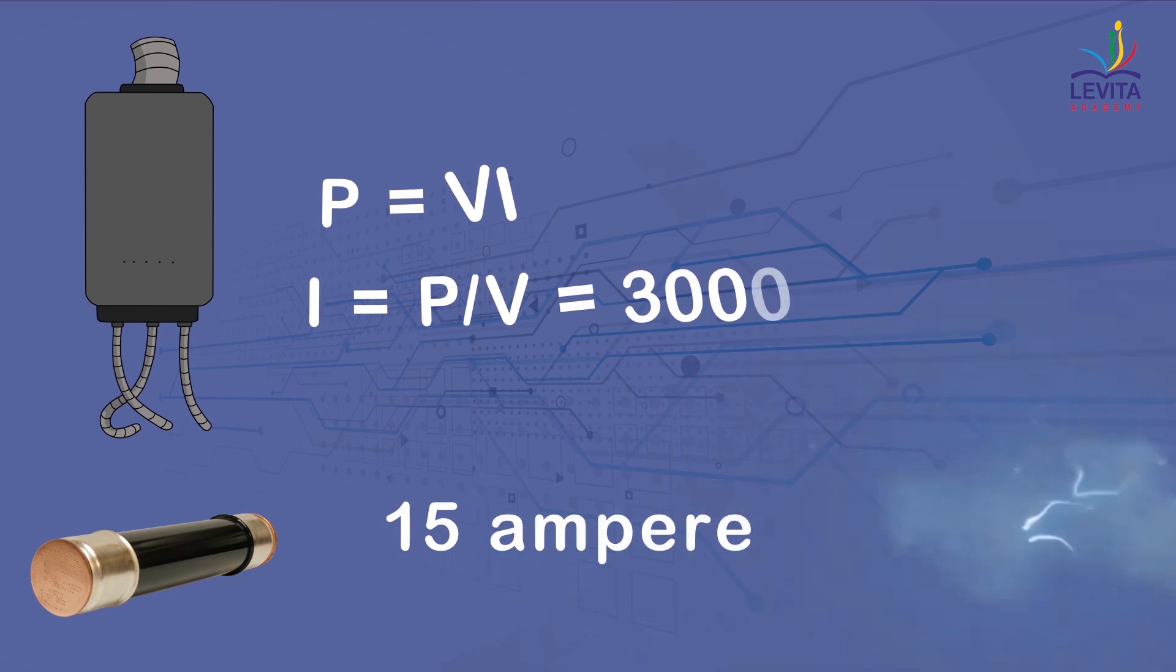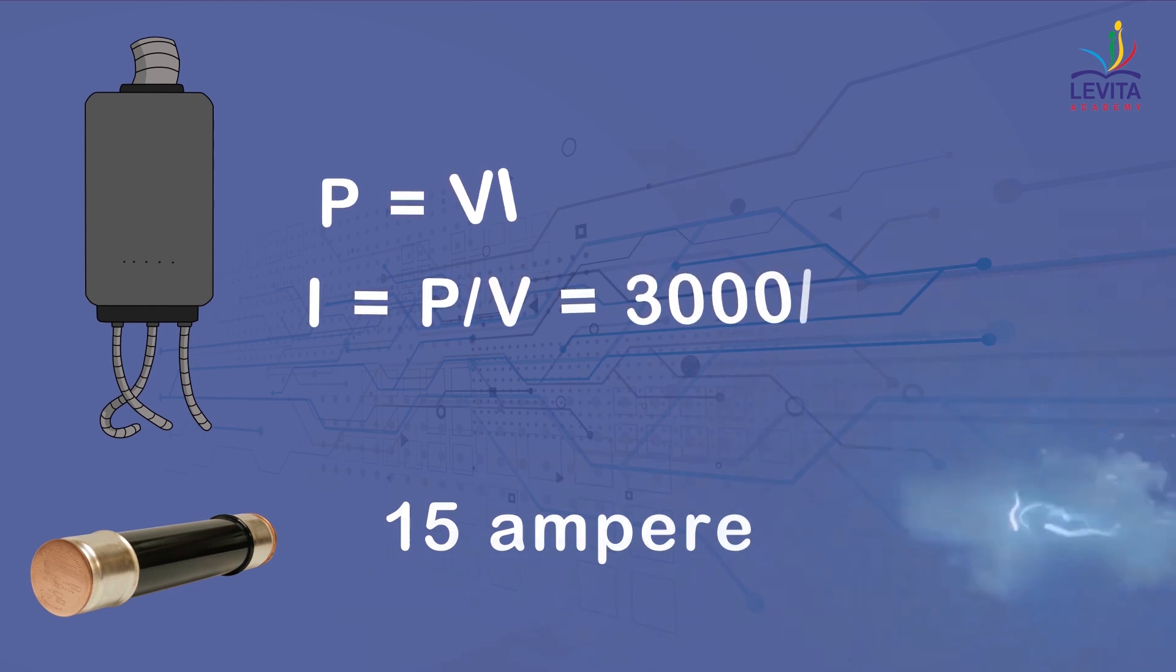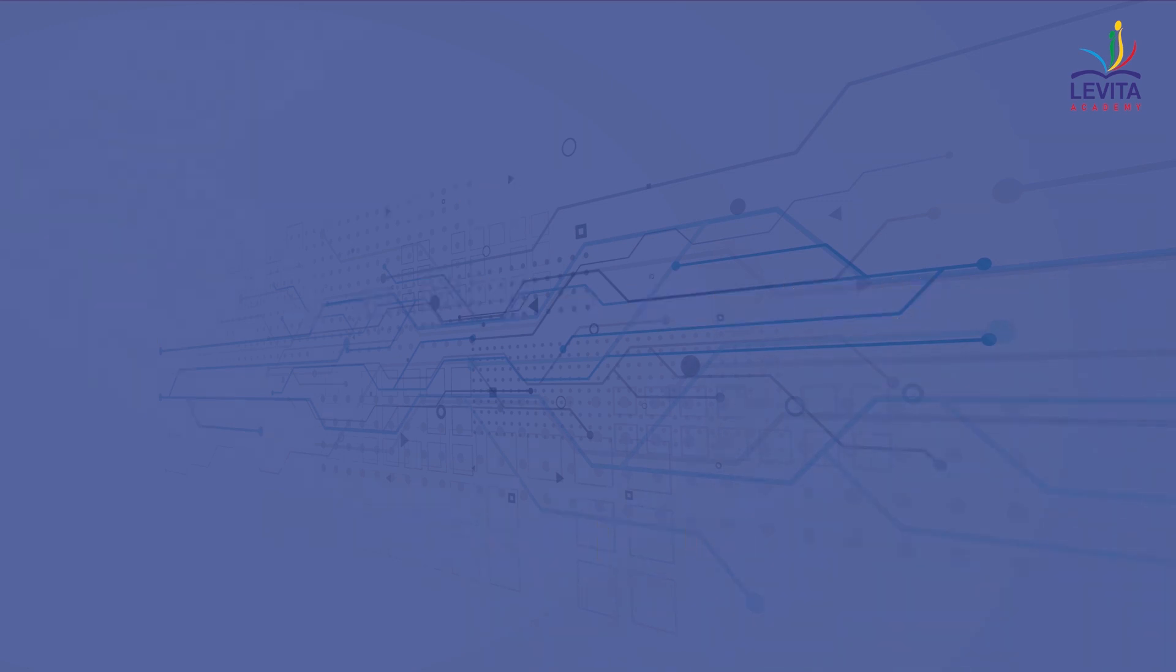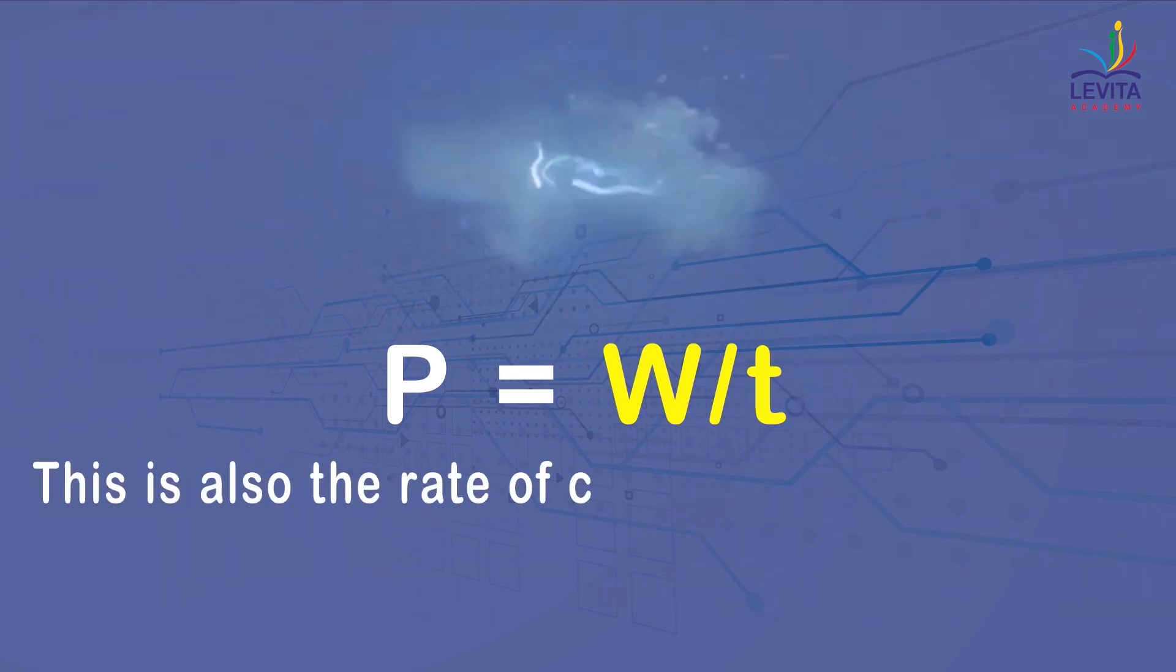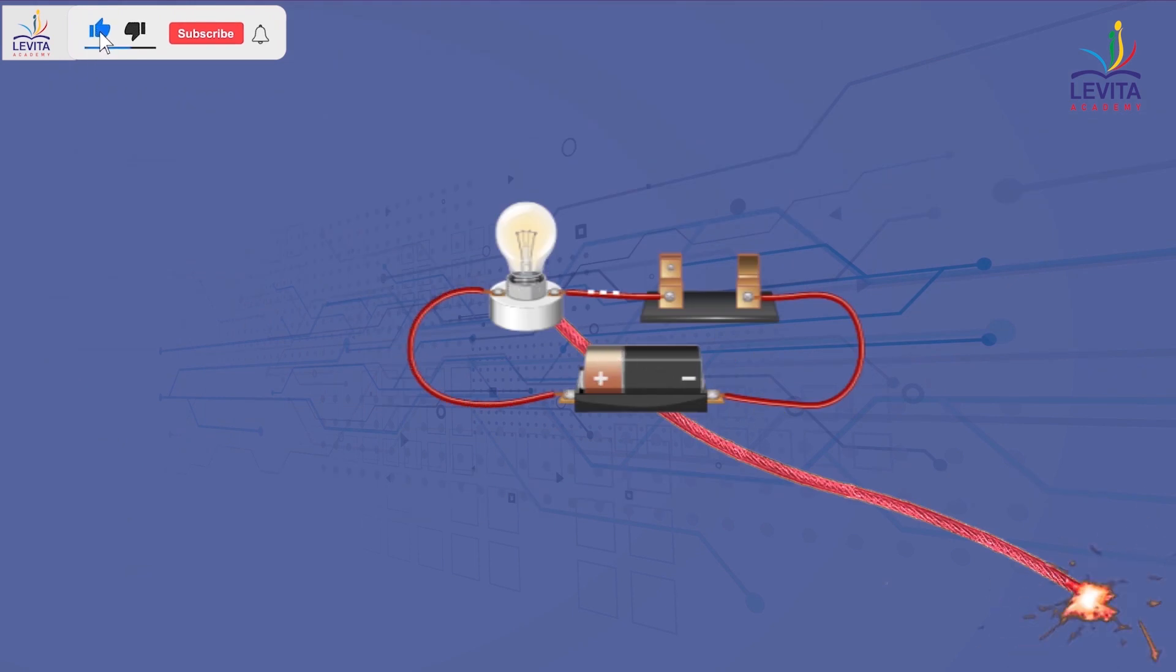This brings us to the final portion of electricity that is electric power. We have already discussed about power and know that power is defined as the rate of doing work which can be expressed as P = W/T. This is also the rate of consumption of energy.